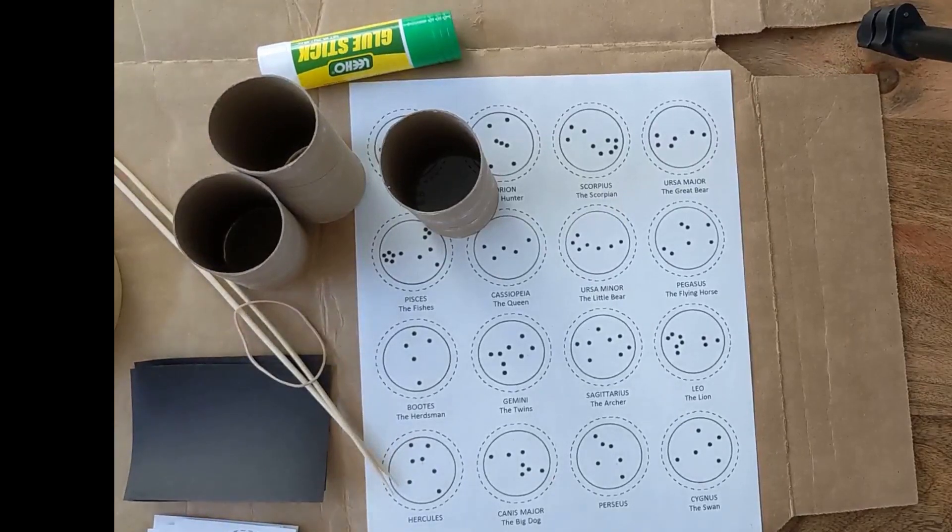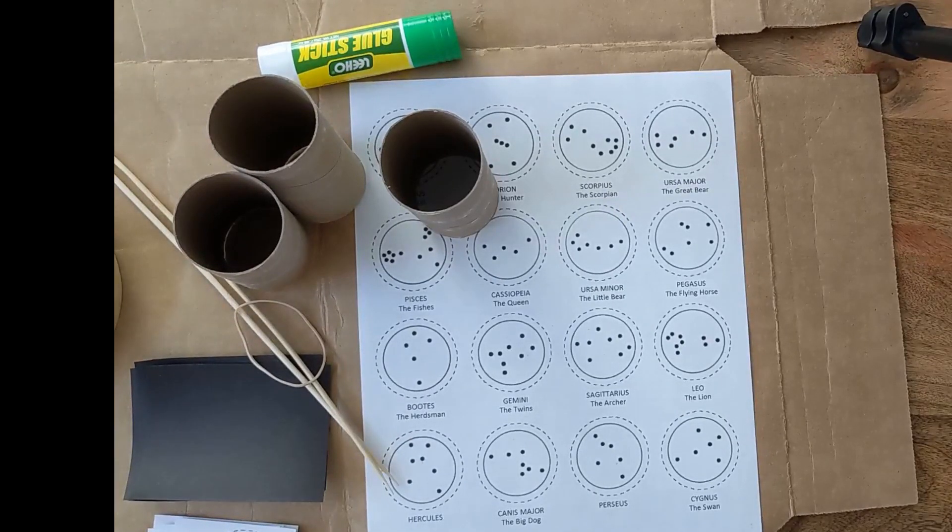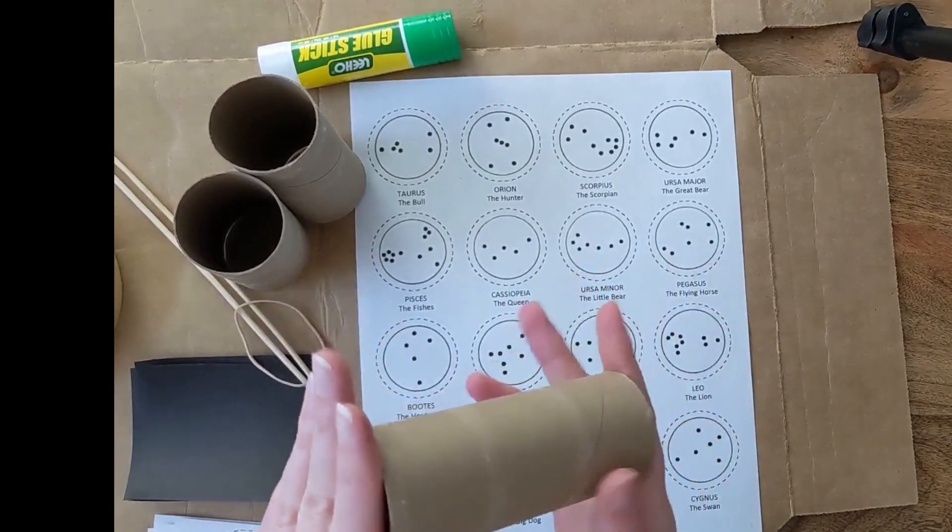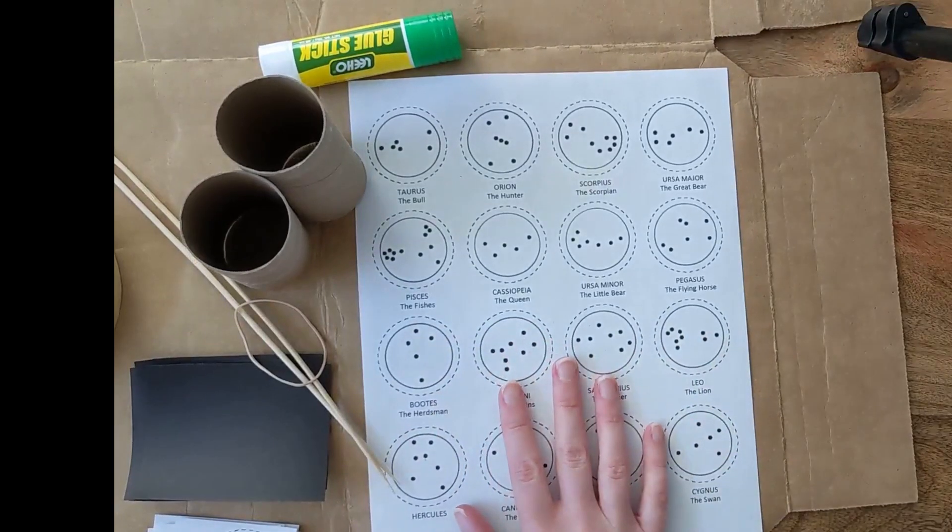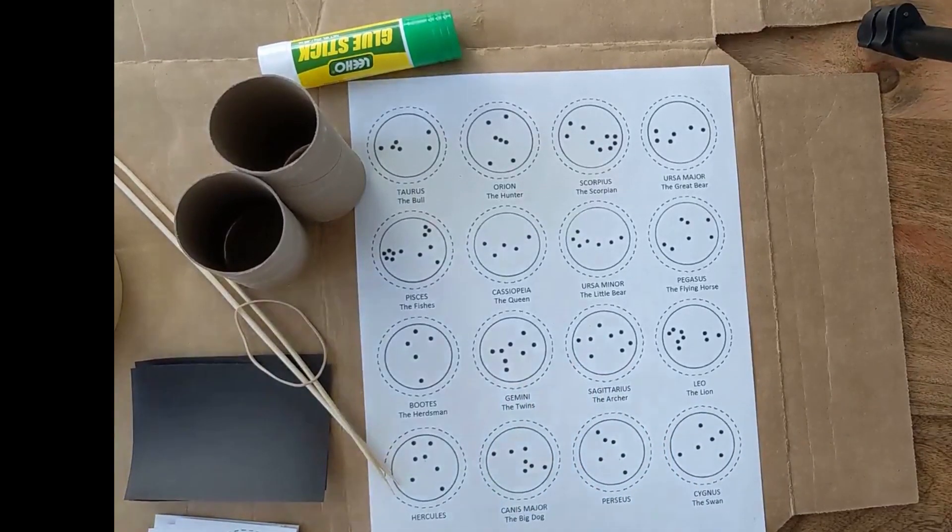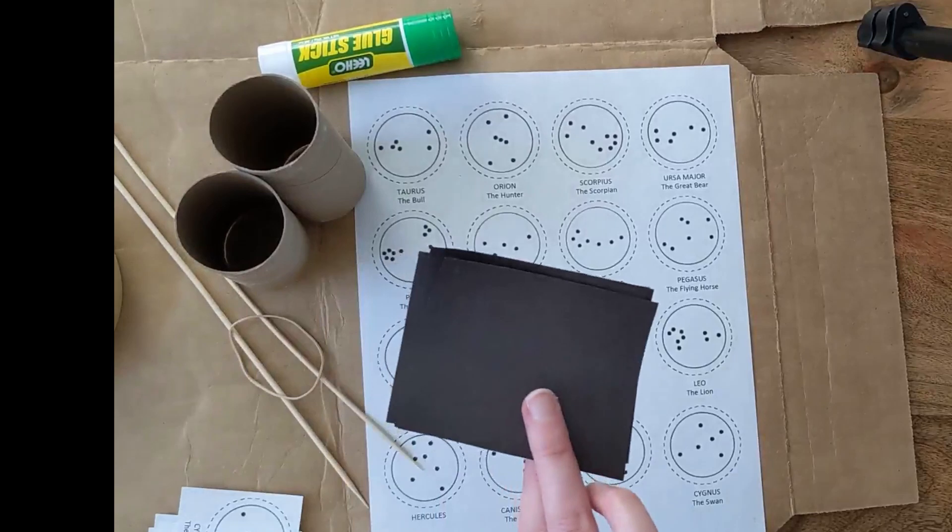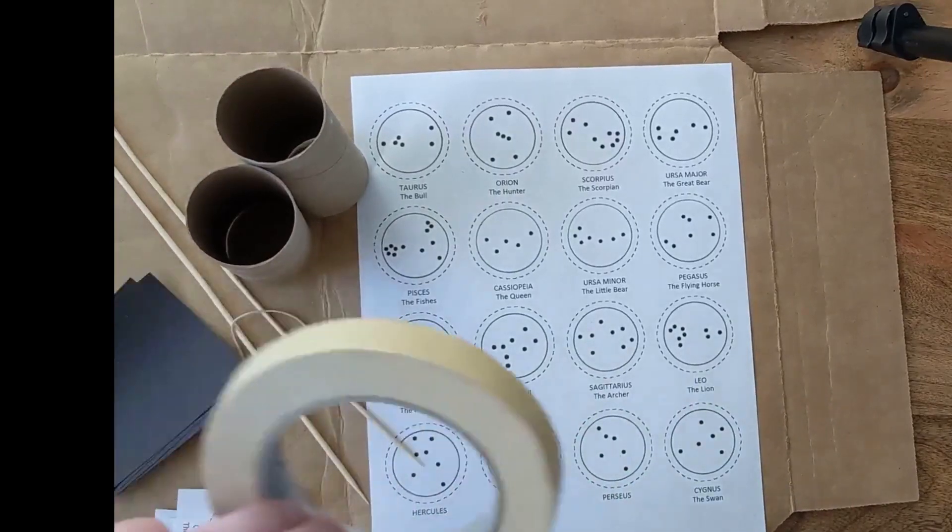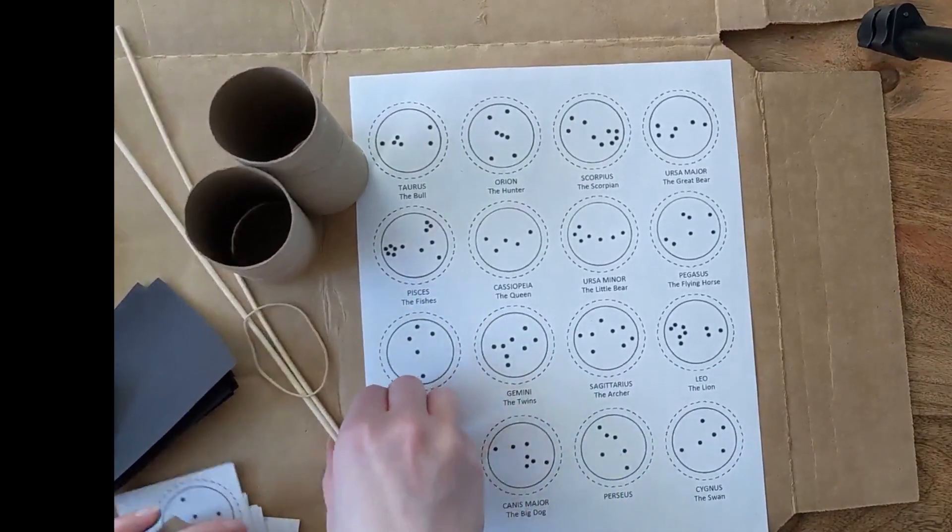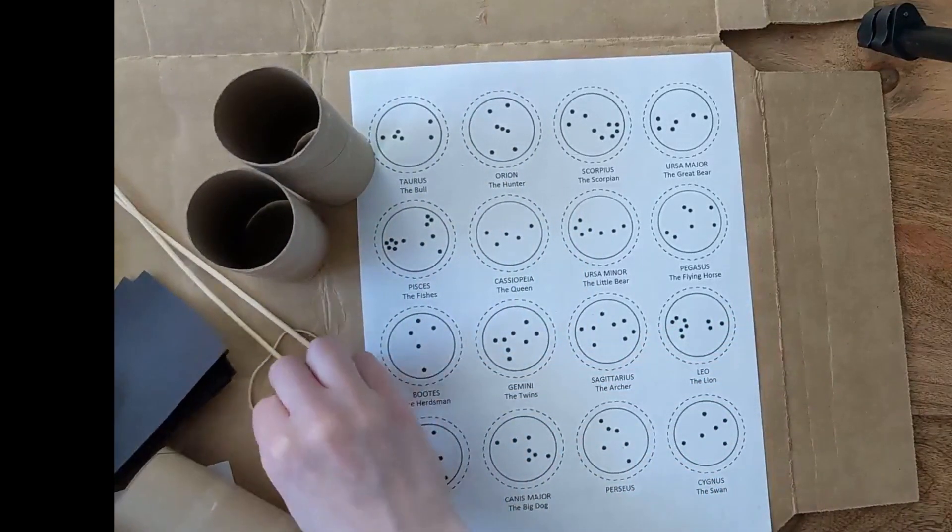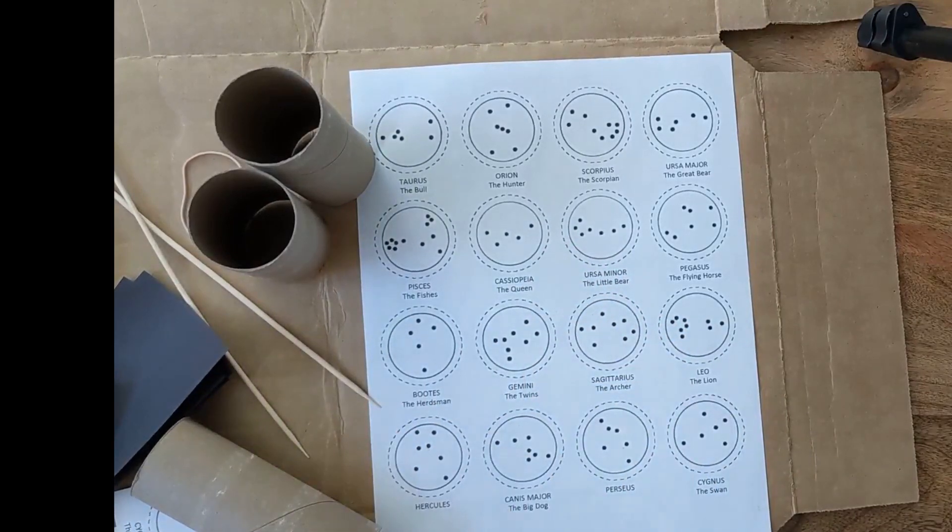So this is actually really easy and we can use a toilet paper roll or a paper towel roll. You might want to cut it in half. Constellation printout linked below that you can print out single-sided. You can use aluminum foil, or I'm using black cardstock or construction paper. You're going to want glue. I also have tape just in case. I'm using skewers but you can use a push pin or a toothpick, a rubber band, and a flashlight.